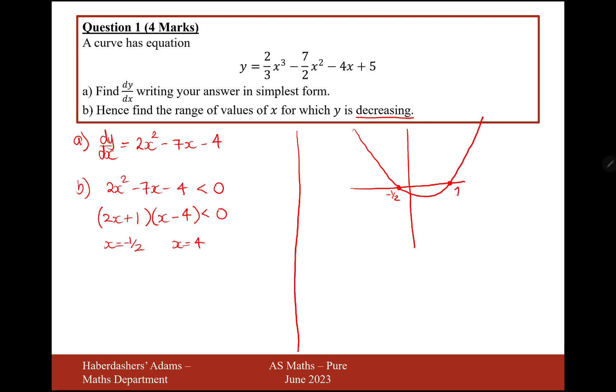So what we want to find now is the region for which this quadratic, this differential, is less than 0, which would be in this region here between minus 1/2 and 4. So therefore, our final answer for this question is minus 1/2 to x to 4. So x values in between minus 1/2 and 4. So there we are. That's the answer for question 1. Let's now move on to question 2.